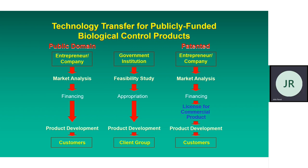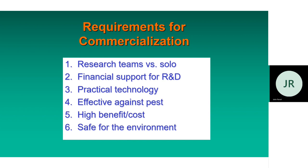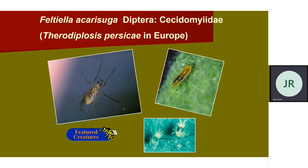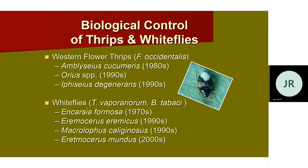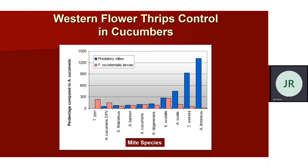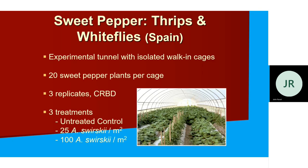Requirements for commercialization: research teams versus solo, financial support — these are the technical aspects. New product development: cumulative number of species has increased since 1970. New species of insects are developed and new arthropods are recruited for this sector. There are many challenges as well because in many cases it is case-specific.